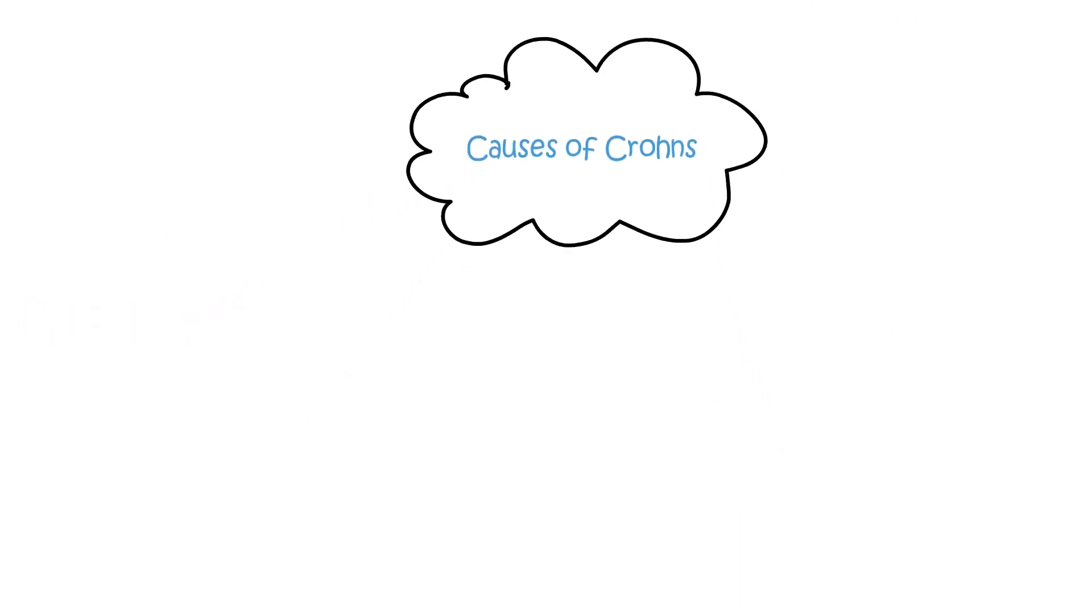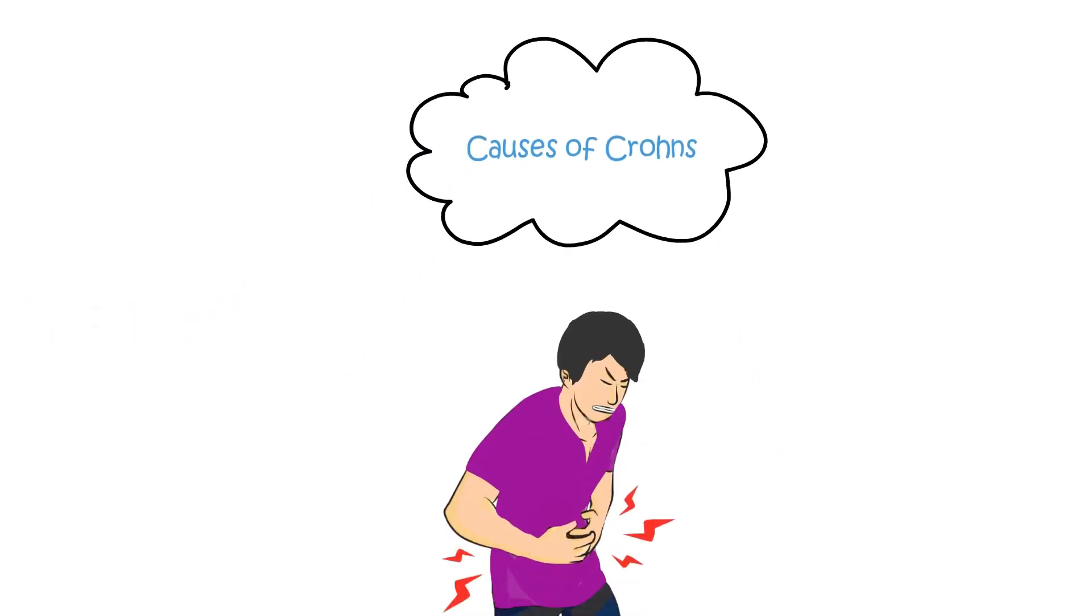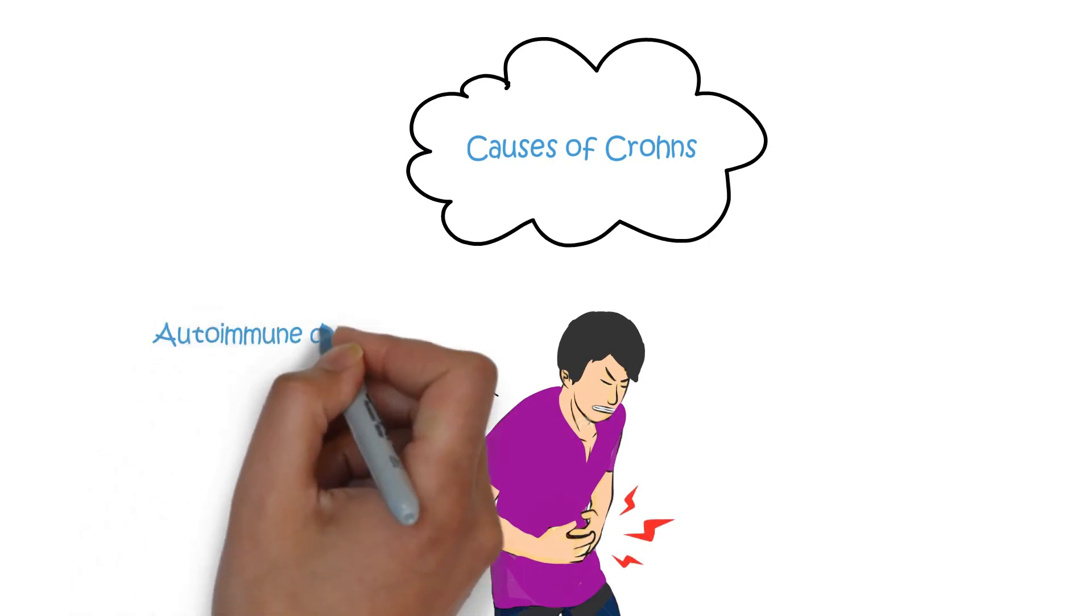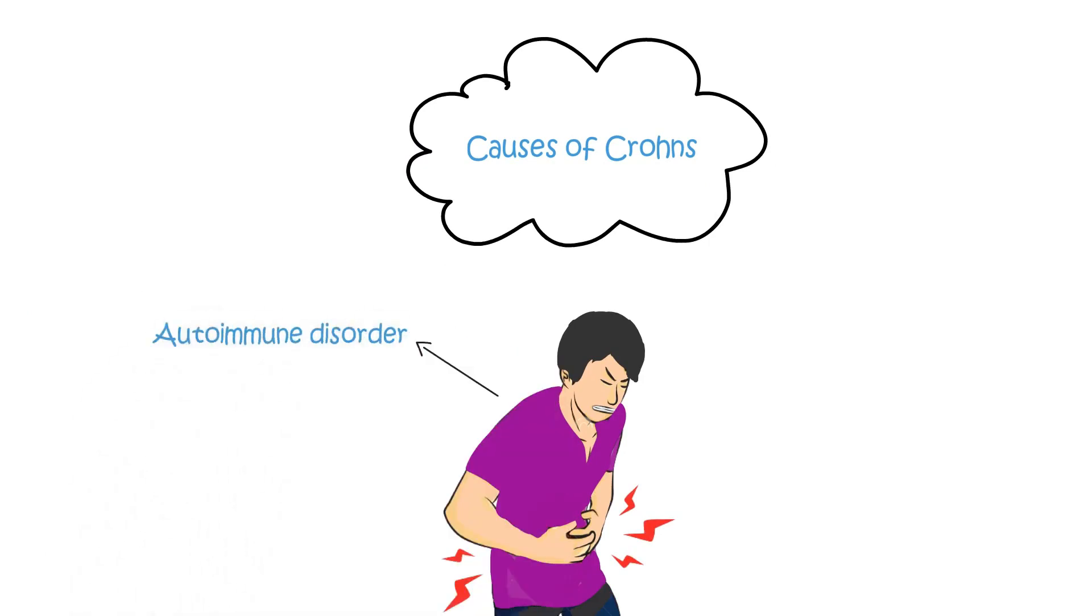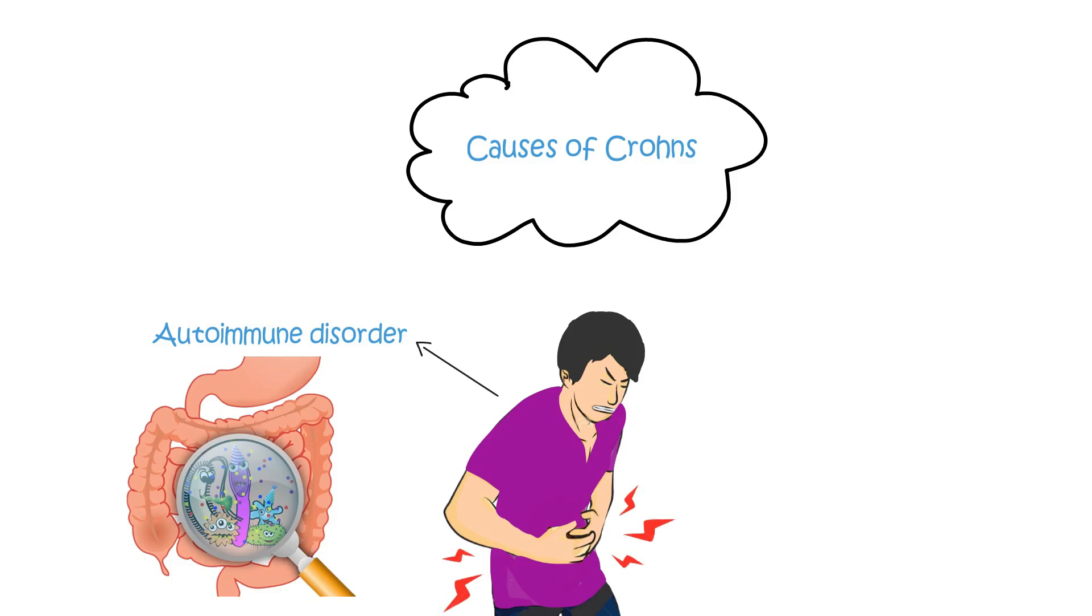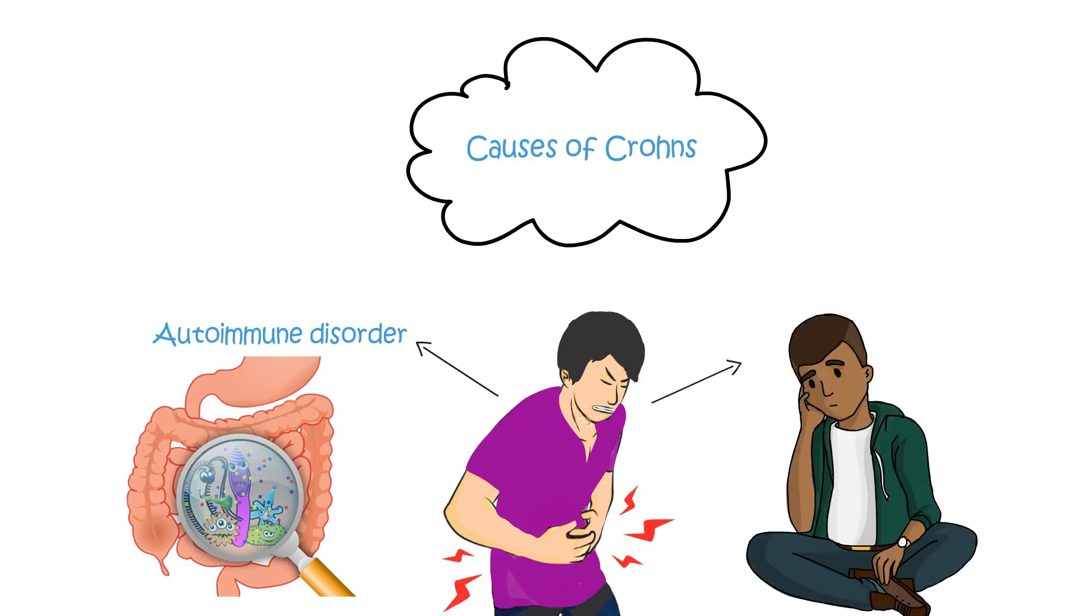Causes of Crohn's. The cause of Crohn's is not known, but it is believed to be an autoimmune disorder, which means that for some reason, the body's own immune system attacks the healthy cells in the large intestine, leading to inflammation and all of the unpleasant symptoms that come along with it.